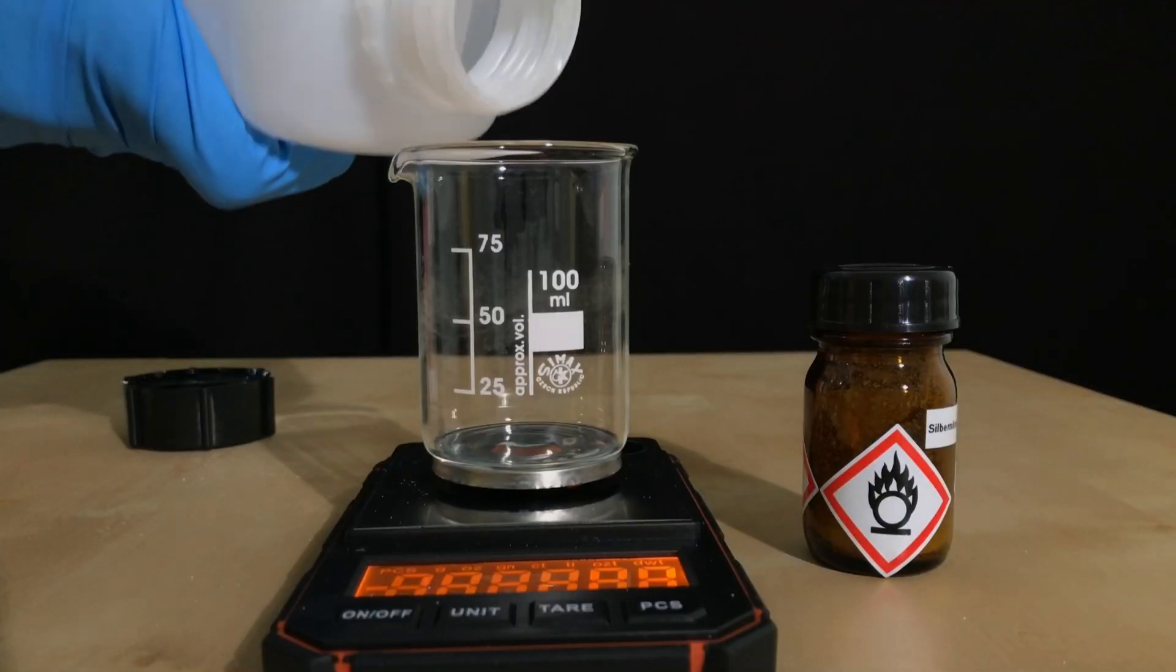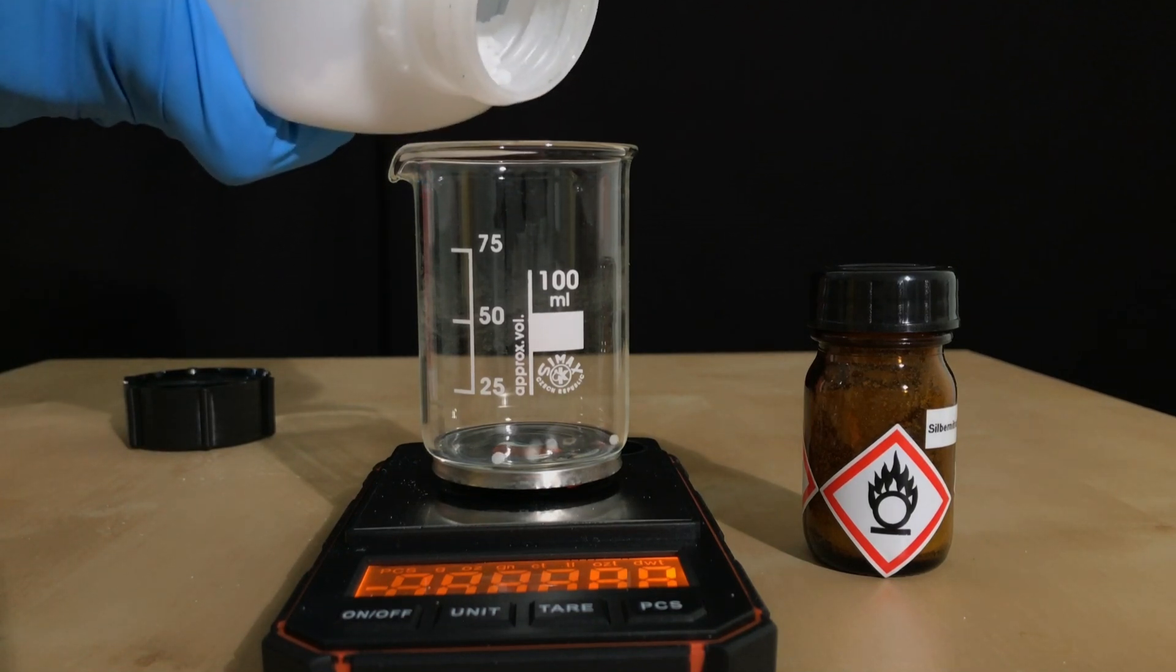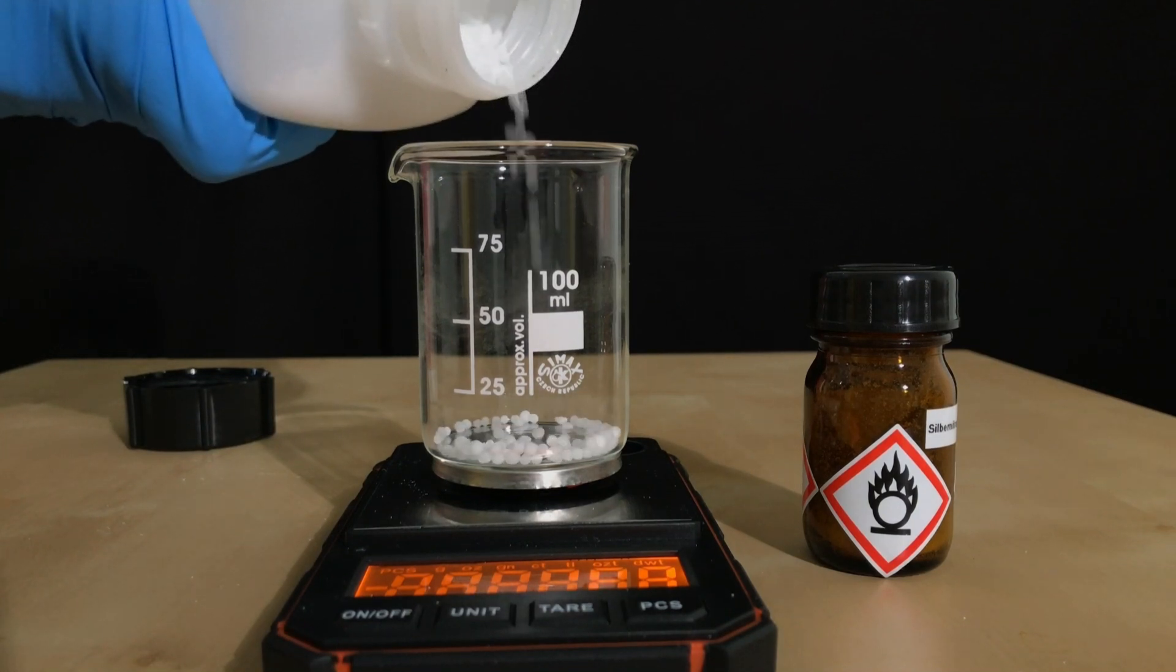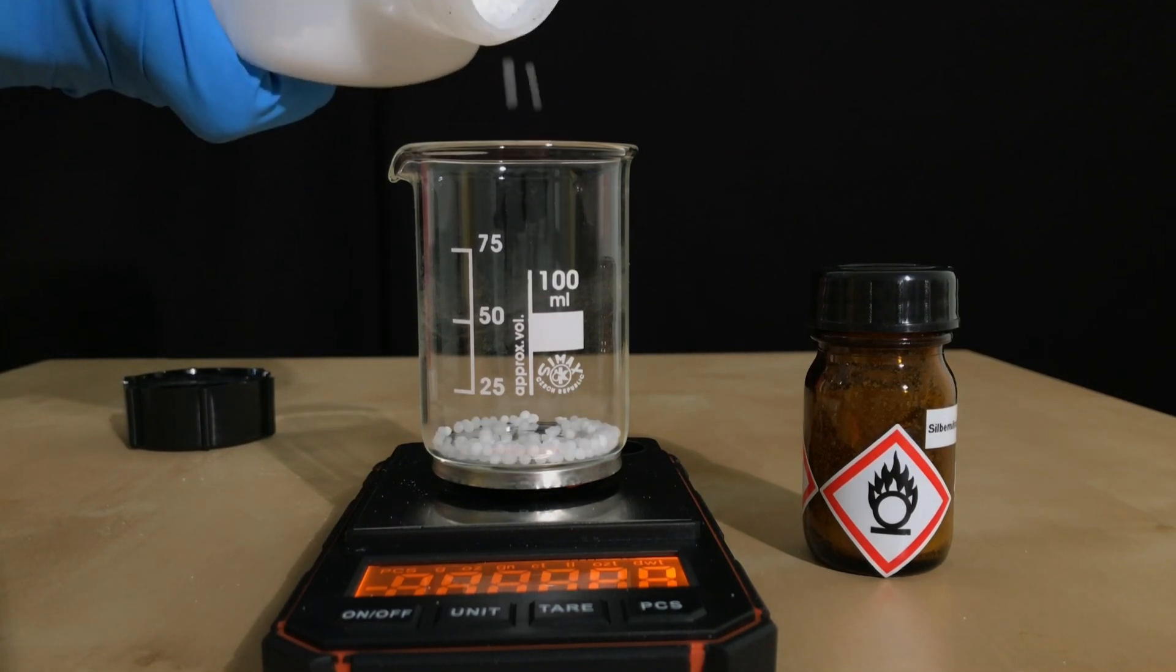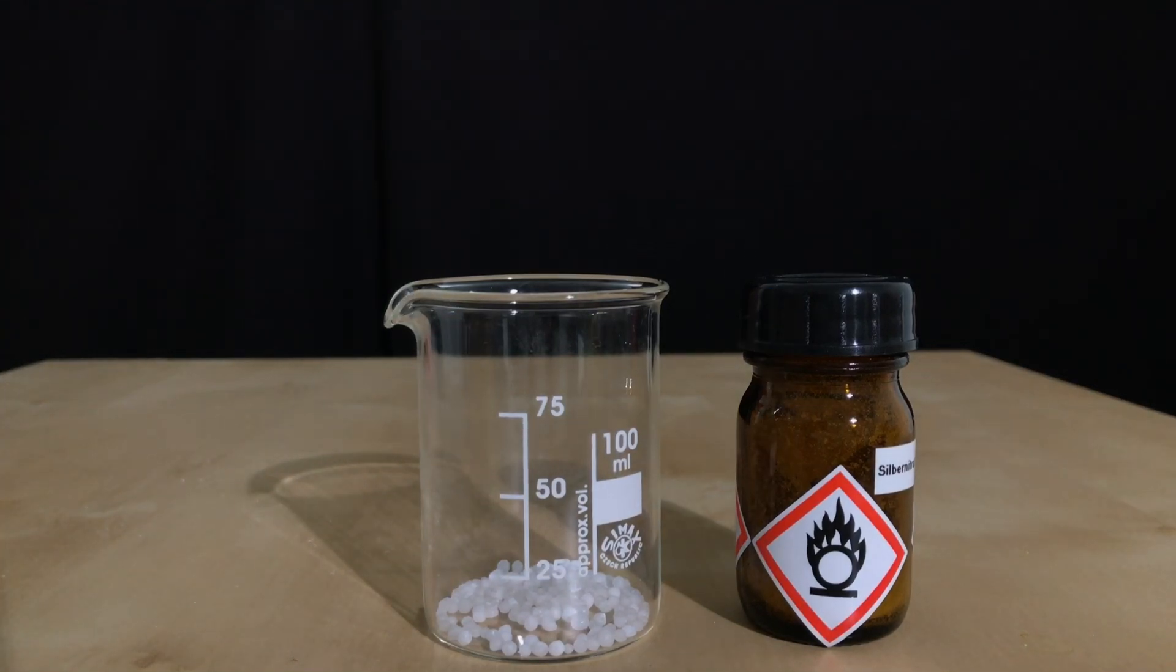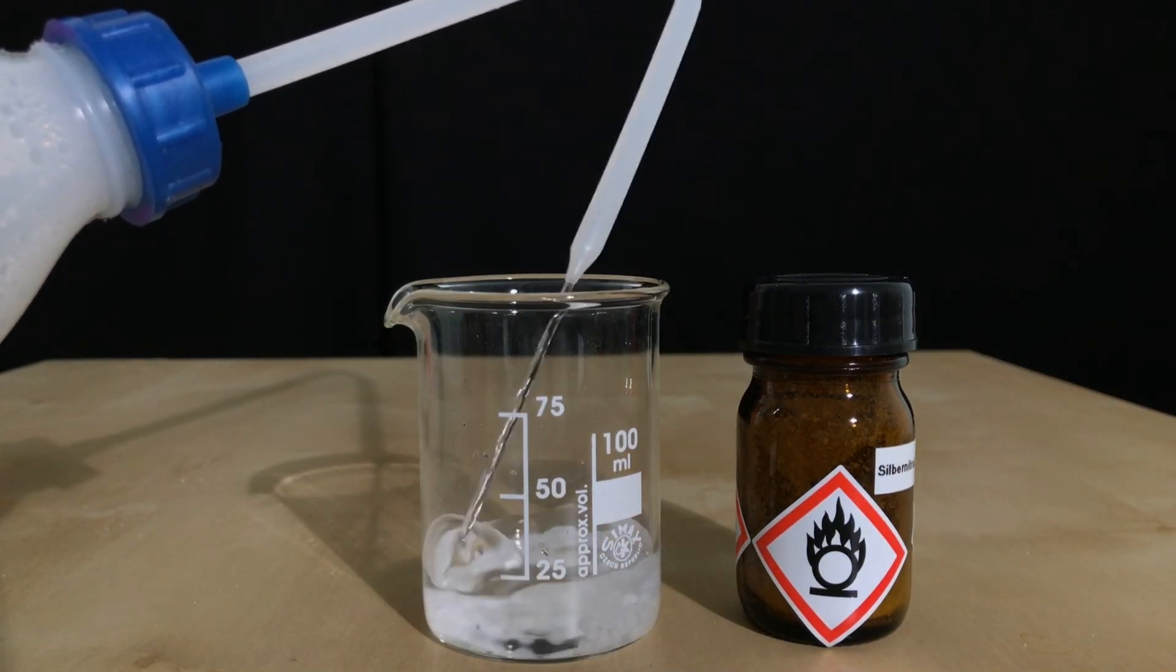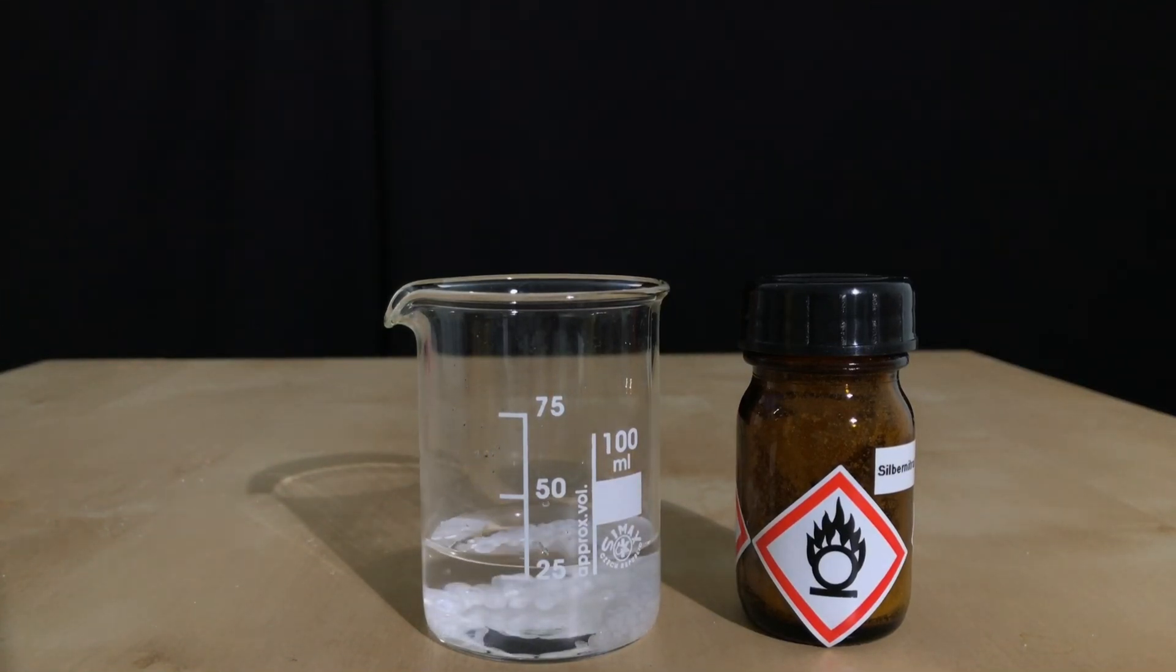The next reagent to be weighed out is sodium hydroxide. We use 3.2 grams of sodium hydroxide, which represents a huge excess, in order to make sure that all of the silver nitrate reacts. I already said it way too many times, but add sodium hydroxide to water and not the other way around. I still added water to the sodium hydroxide and then swirled around the beaker.